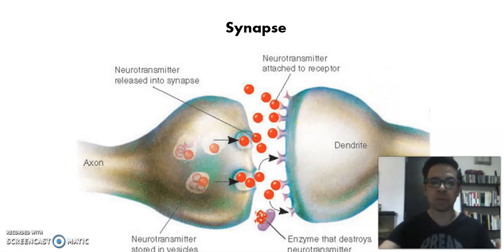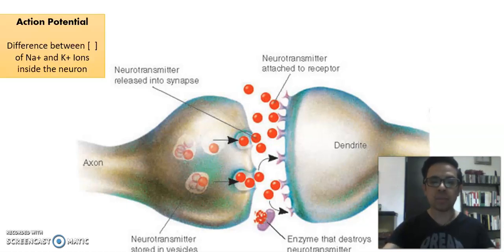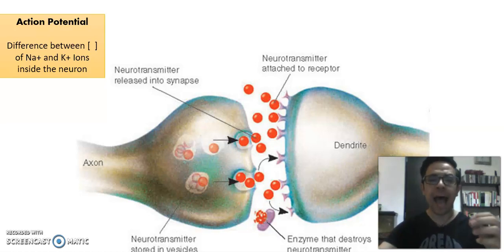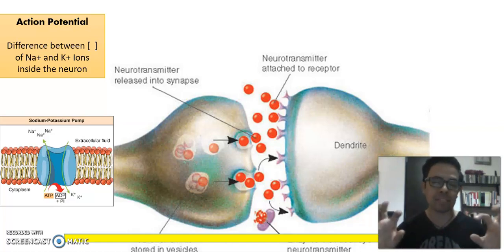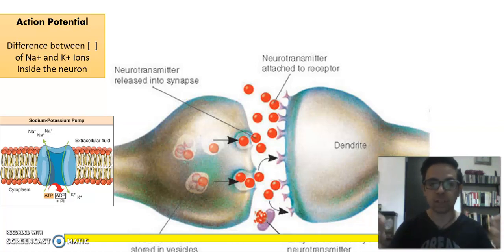Neurotransmitters communicate using electrochemical communication. How do we call this electric impulse? It's known as action potential. The action potential is produced by a difference in concentration between two ions: sodium and potassium. It is possible for the ions to move inside and outside the cell using special proteins inside the membranes of the cells known as channel proteins. When enough sodium ions go inside the neuron, the neuron will be slightly more positive than the outside, and that will cause an electrical impulse that we call the action potential.